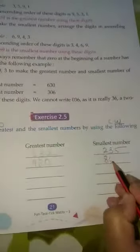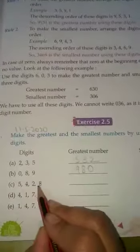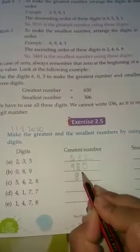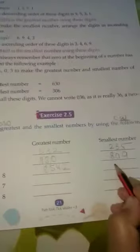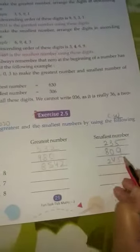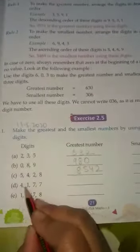For digits 8, 5, 4, 2, the greatest number is 8542. For the smallest, we arrange them as 2, 4, 5, 8.